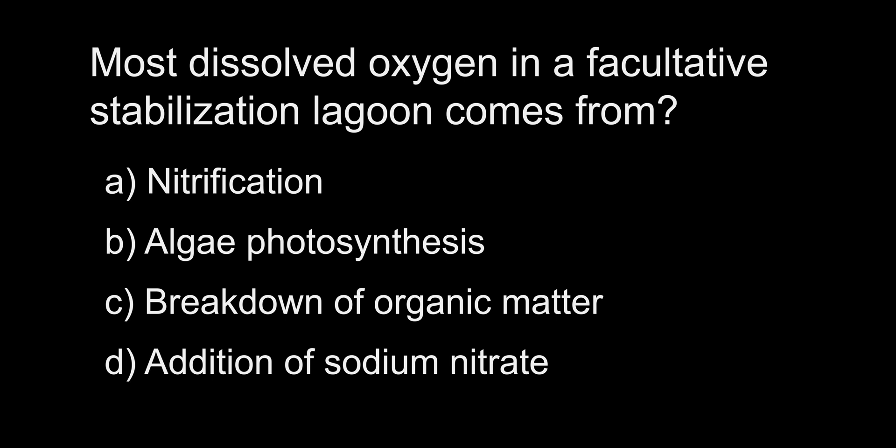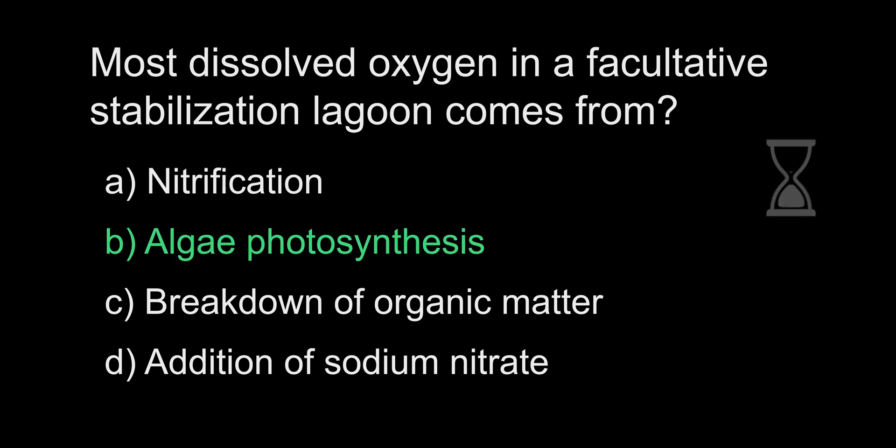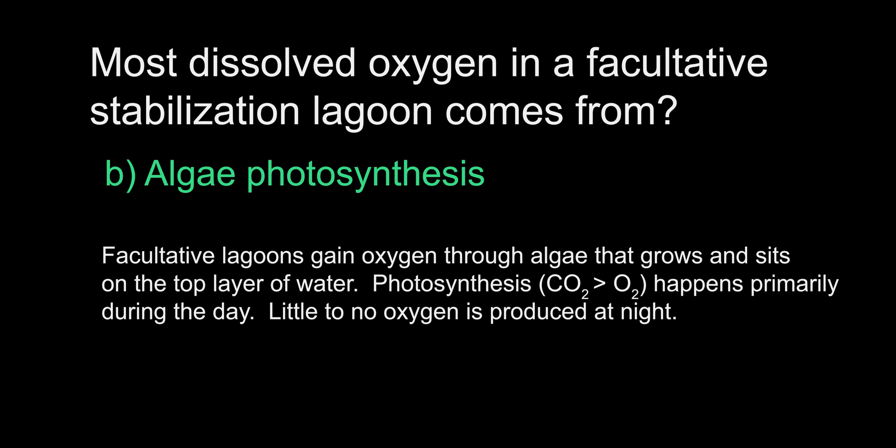Most dissolved oxygen in a facultative stabilization lagoon comes from: A. Nitrification, B. Algae photosynthesis, C. Breakdown of organic matter, D. Addition of sodium nitrate. The answer is B, algae photosynthesis. Facultative lagoons are a simple and effective way to treat wastewater when permits are not very stringent. A traditional facultative lagoon will let Mother Nature do its thing. Photosynthesizing algae that grows on the surface of the lagoon will introduce oxygen into the water during the day. At night when there is no sun, there is little to no oxygen production taking place.